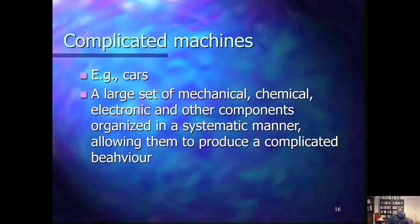If you look at complicated machines, for example consider a car — again you have a number of components: chemical, electric, and other components, very many, in the range of thousands. Again, there is a systematic manner of how you put these together to make the particular machine, which produces a range of behaviors, provides a range of affordances, and allows humans to use them. This usage helps the maintenance and expansion of society.